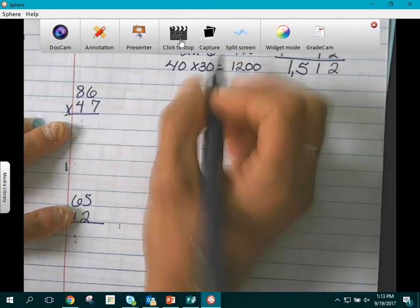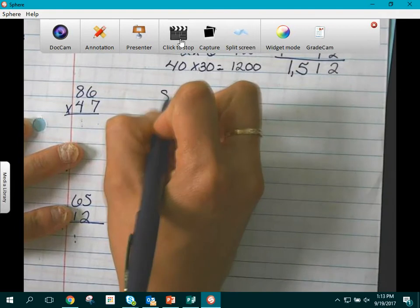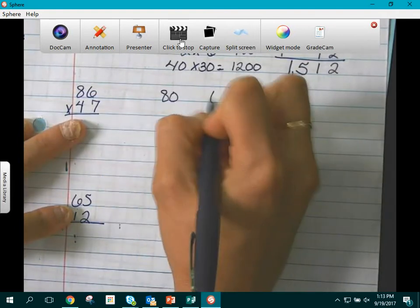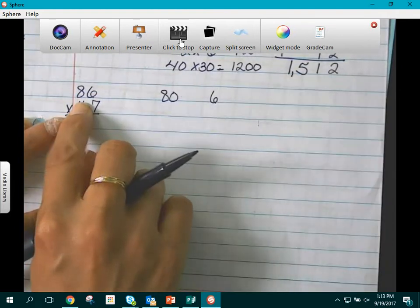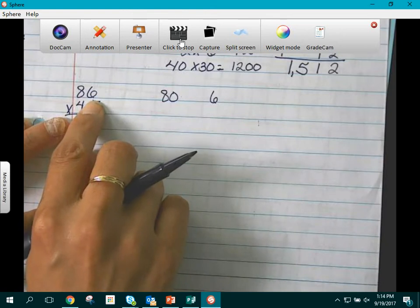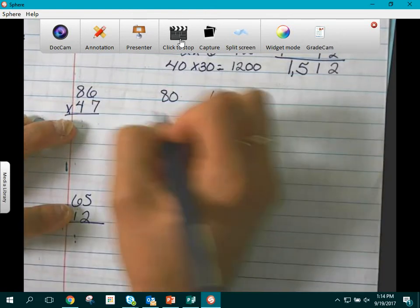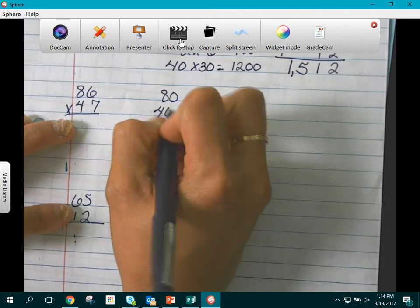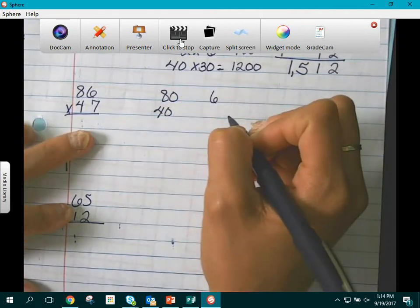So they should have 80 and 6. Working with the values of each place. 4 tens is 40. And 7 ones.